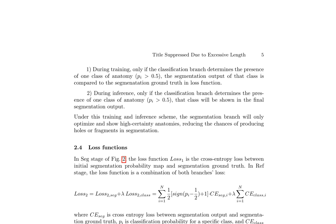CMR segmentation is enhanced by a novel approach that integrates classification and segmentation tasks. During training, the model prioritizes classes with high confidence, exceeding 0.5, to ensure accurate segmentation outputs. In inference, only classes with high confidence are included in the final segmentation, refining the model's precision. The loss function is a synergy of segmentation and classification losses, striking a balance between the two branches.